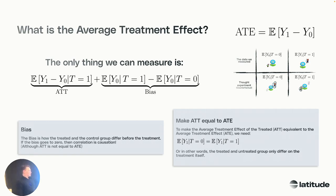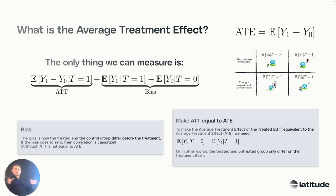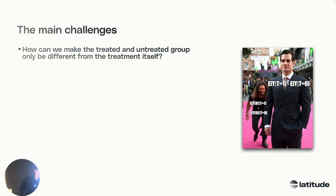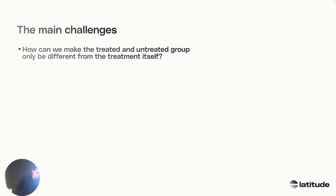There's one more thing: the average treatment effect of the treated (ATT) is not equal to the ATE in general. We can make it equal to the ATE if we say that after treatment there's also no difference between the groups — it's a small technicality. Basically it says the treated and untreated groups only differ on the treatment itself. How can we make the treated and untreated groups only differ from the treatment itself? Well, that's the solution — let's quickly skip to the next part.